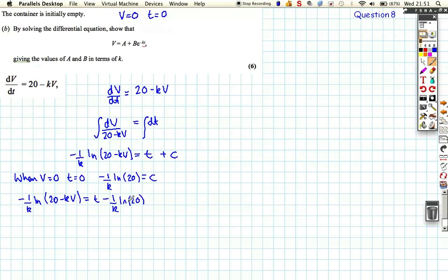So we can put this all back together. We get minus 1 over k log(20 minus kV) is equal to t minus, which is our c, 1 over k ln 20. And then we can use the laws of logs here. So if we take this to the other side, we're going to get plus 1 over k, and then we've got two logs added together. We're going to get t is equal to 1 over k log, and then we're going to get a fraction, because if we've got a minus log here and a plus log when we've brought that over, we're going to have 20 as the numerator and as the denominator we're going to have 20 minus kV.